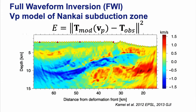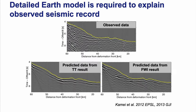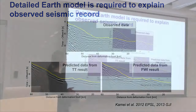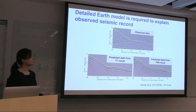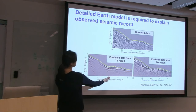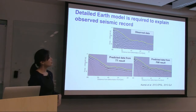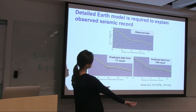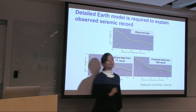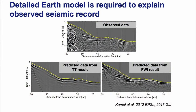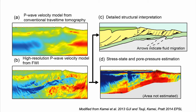That is our travel time tomography model versus our full waveform inversion model. The top shows observed data from the Nankai subduction zone. On the left, using travel time tomography, the smooth model produces smooth waveforms with visible travel time picks, but doesn't reproduce the waveform details. By using full waveform inversion, we can improve the details significantly, particularly reproducing wide-angle reflections. This opens up a lot of subsequent studies, including structural interpretation and rock physics conversion to detailed stress state and pore pressure estimation.